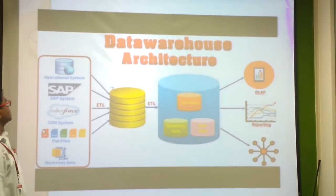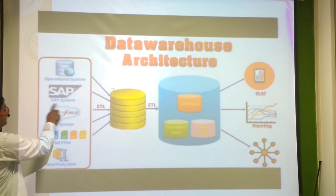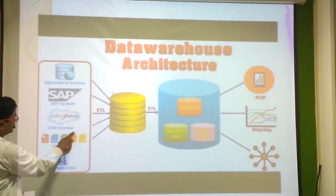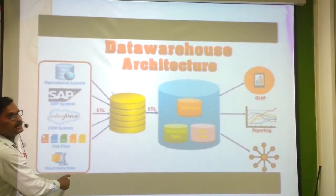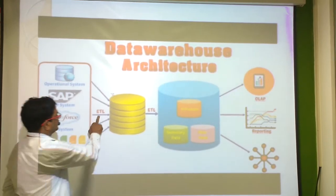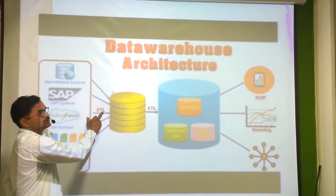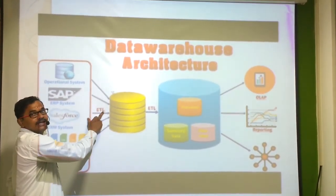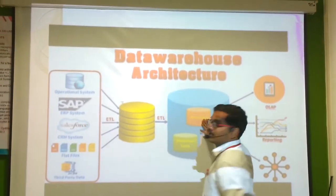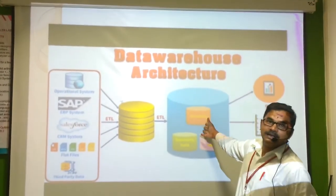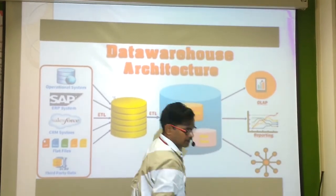Another diagram for simple understanding: operational systems, ERP systems, CRM systems, flat files, and third-party data are the sources. After that, extraction, transformation, and loading is performed using ETL tools. After that, it is sent to metadata — metadata means data about the data. After that, they are used for reporting.